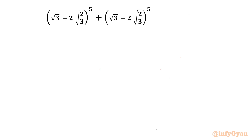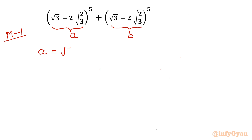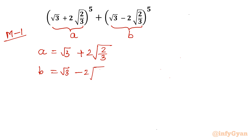I will demonstrate two different ways to solve this problem. In Method 1, I will use substitution. I will consider the first bracket as 'a' and the second bracket as 'b'. So a = √((3 + 2√2)/3) and b = √((3 − 2√2)/3).